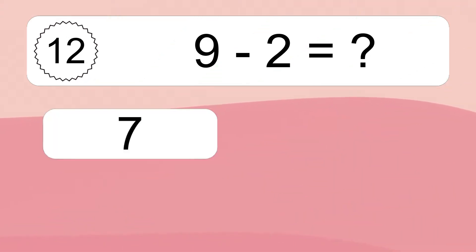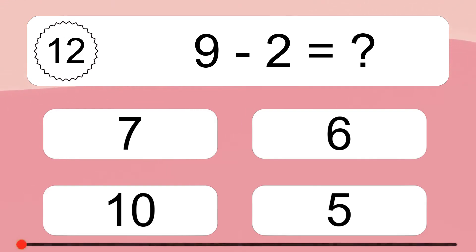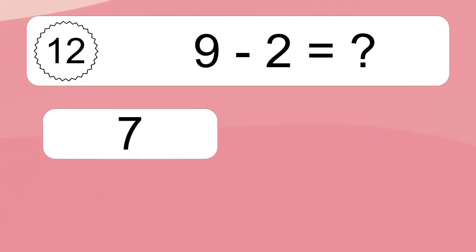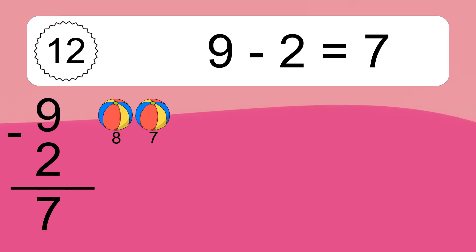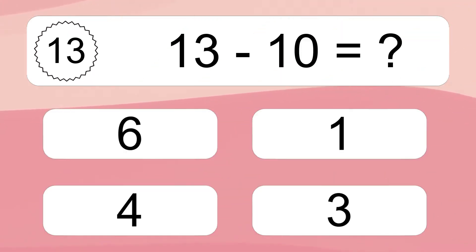9 minus 2 equals what? 9 minus 2 equals 7. Let's count it: 8, 7.